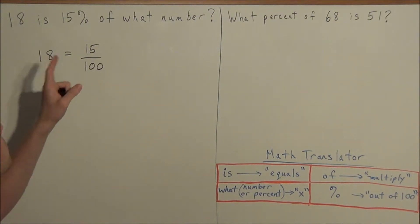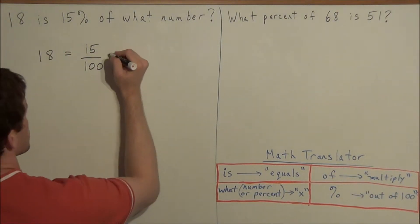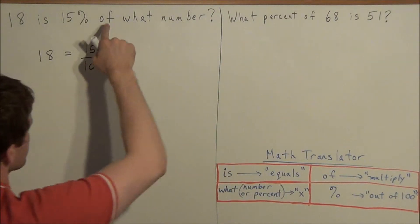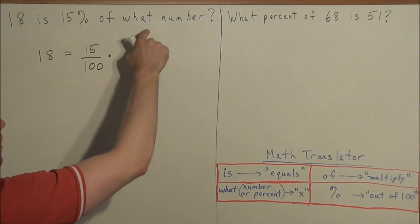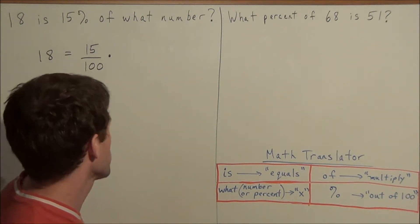And now 15% of, the word of means multiply in math. So we use that part of our translator to associate of with multiplication. And now what number? Well, whenever we have some unknown what number, we can always just call that x.